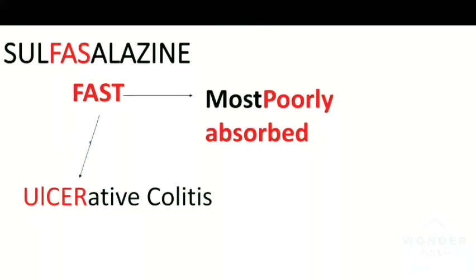One important thing to remember: you cannot fast for a very long period of time. In terms of chronic ulcer, sulfasalazine cannot be used. For sulfasalazine, remember: high chance of ulcerative colitis, and when there is no food in the body, absorption is very poor — sulfasalazine is the most poorly absorbed sulfonamide. Mnemonics for chronic use will come in the next slide.